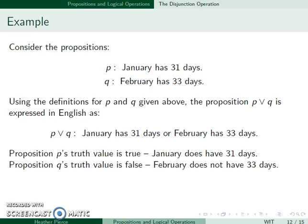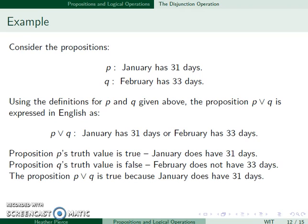We still know that P is true and Q is false. So, P or Q is true, since one of them is true. January does have 31 days.